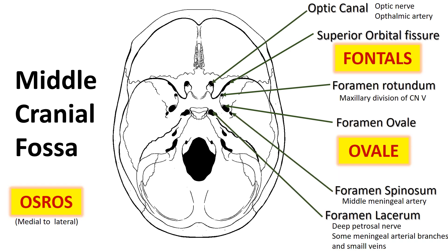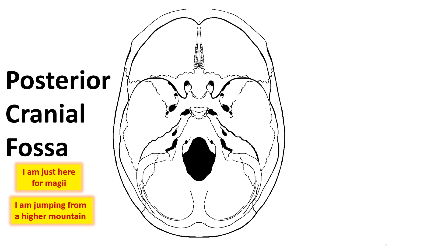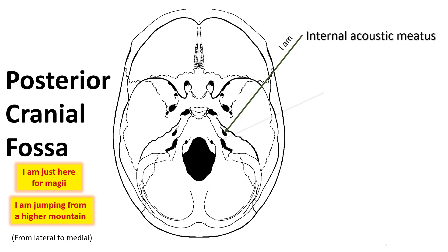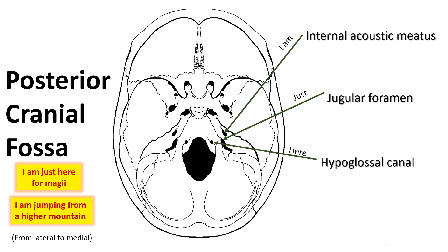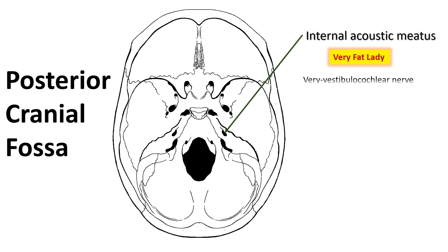Here are the other structures that pass through other foramina of the middle cranial fossa. For the posterior cranial fossa, use 'I'm just here for magic' or 'I'm jumping from a higher mountain' to remember the foramina from lateral to medial: internal acoustic meatus, jugular foramen, hypoglossal canal, and foramen magnum. Use 'fat lady' to remember the contents of the internal acoustic meatus: vestibulocochlear nerve, facial nerve, and labyrinthine artery.